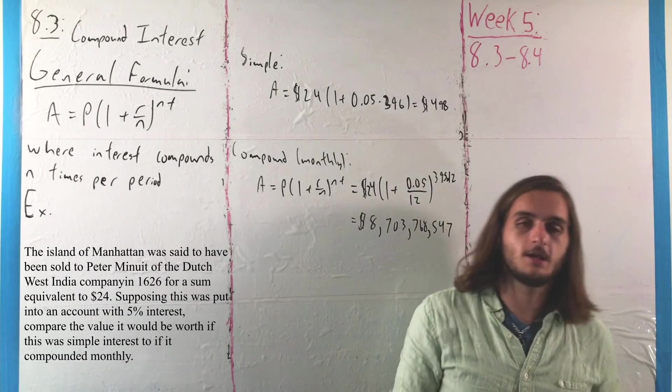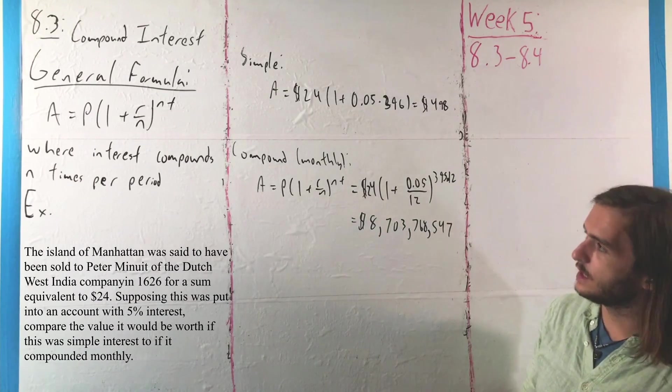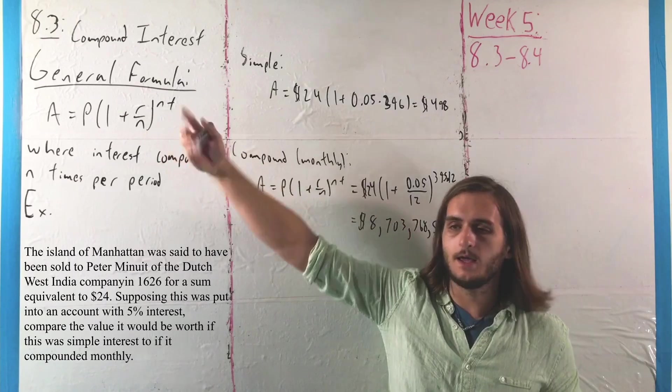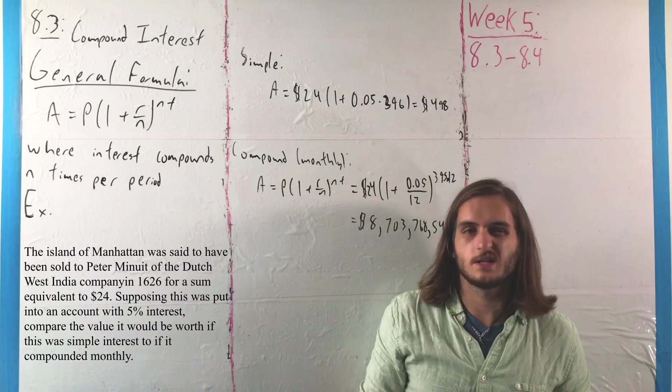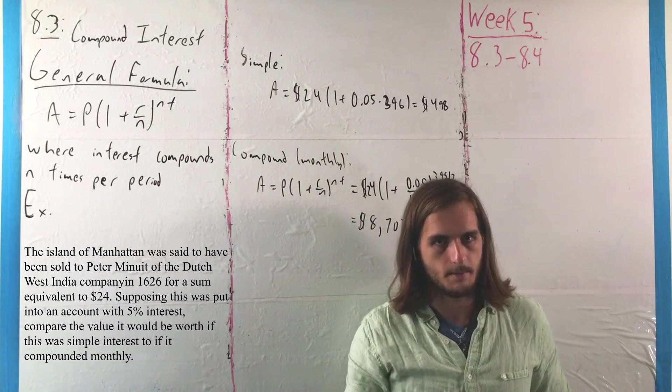Anyway, the next thing we're going to look at here is how we can extend this idea of the general form for n compounding times per period to what is called continuously compounding interest.